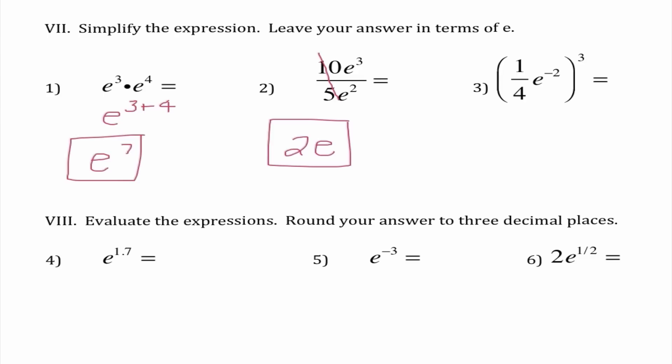When I battle my E's, E cubed over E squared, E in the numerator wins by 1. So my answer is 2E. The third problem, I'm taking this entire quantity to the third power. I know that 1 fourth to the third power is 1 over 64. And E to the negative second power to the third power becomes E to the negative sixth because when I take an exponent to a power, I need to multiply.